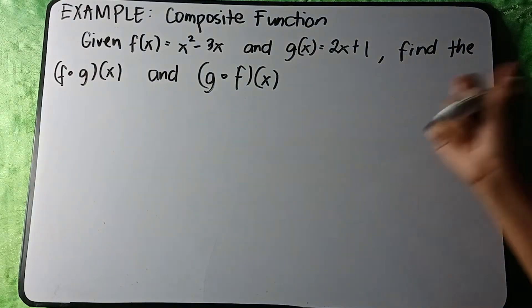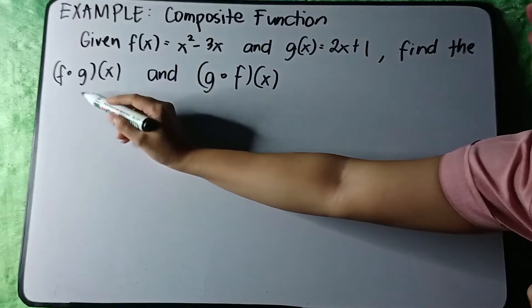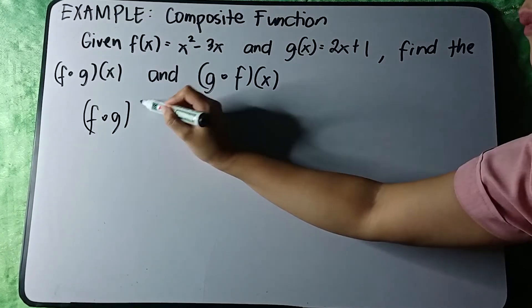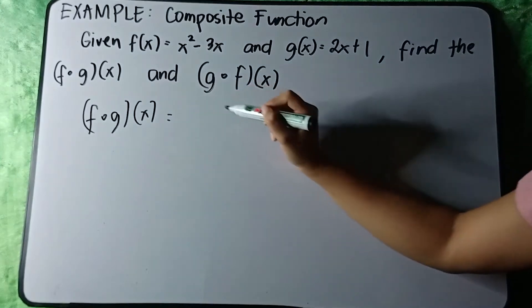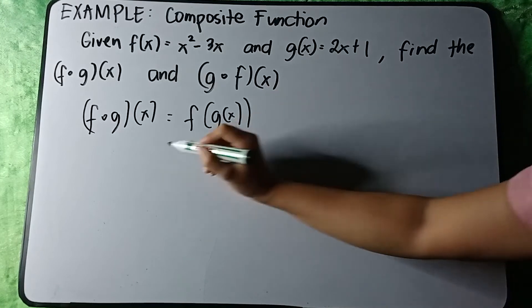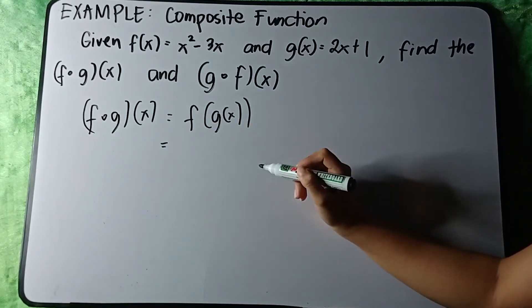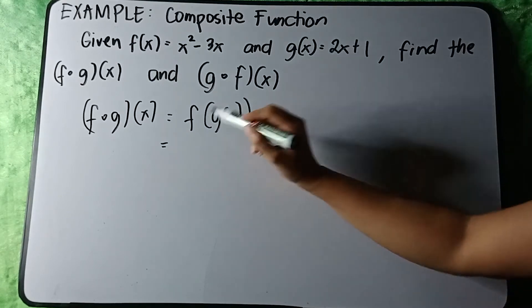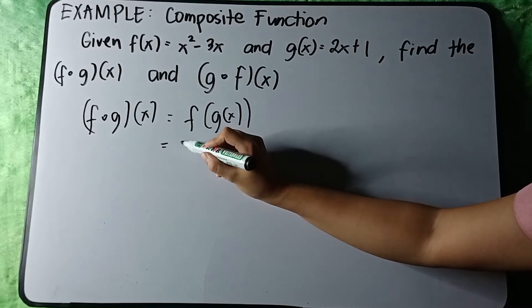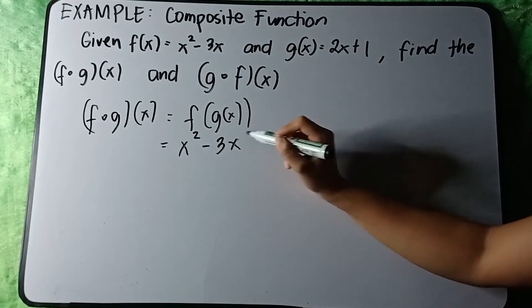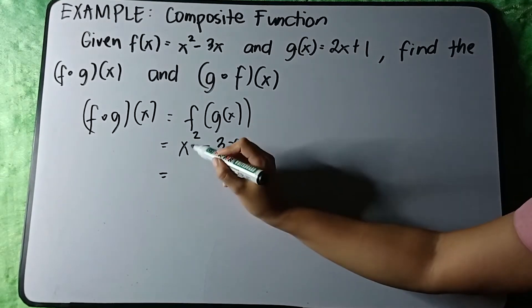First, let's get f composite of g. We have f of g of x, so we are going to substitute x with g(x) for the f(x). We have f(x) = x² - 3x, so this x will be substituted with g(x).